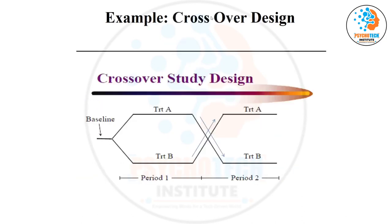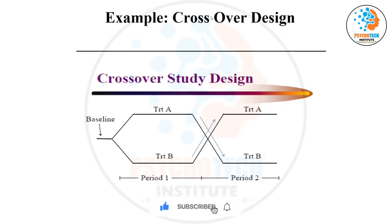In crossover design, at the baseline you divide participants into two groups — treatment A and treatment B. The washout period is very important here, because if you give intervention one and then immediately give intervention two, you cannot know whether the observed effect is due to intervention two or the residual effect of intervention one.